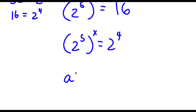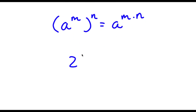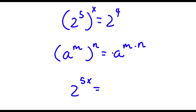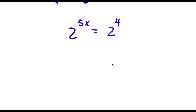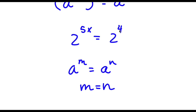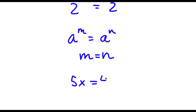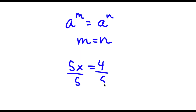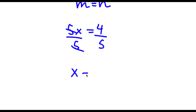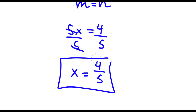Now if I have something in the form a to the power of m to the power of n, this equals a to the power of m times n. So 2 to the power of 5 to the power of x equals 2 to the power of 5x, which equals 2 to the power of 4. Now if I have something in the form a to the power of m equals a to the power of n, then m equals n. So in this case, 5x is equal to 4. To solve this I divide both sides by 5, so I'm left with x is equal to 4 over 5. So this is my answer.